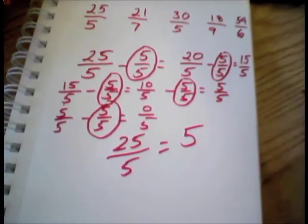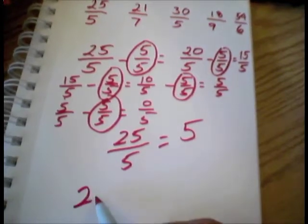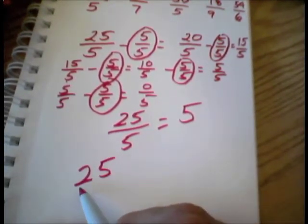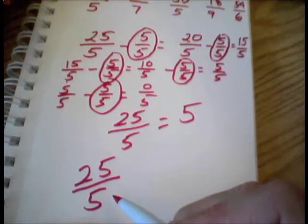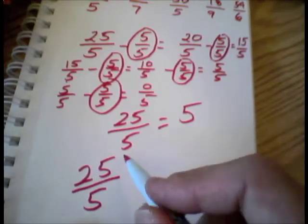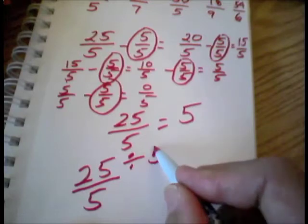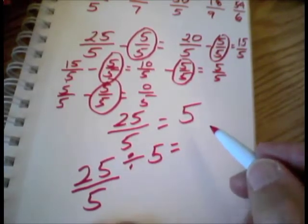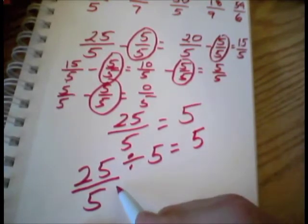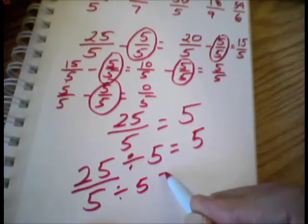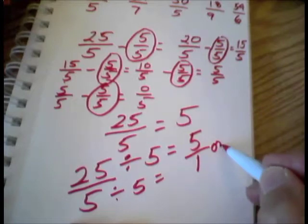Now an easier way might have been to take advantage of that rule that any time you divide the numerator and denominator by the same number, you'll get an equivalent value. So let's divide both by 5. What's 25 divided by 5, Alex? 5. That's correct. And what is 5 divided by 5? 1. So the answer is 5 over 1, or 5.